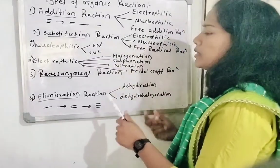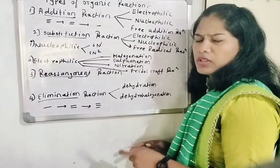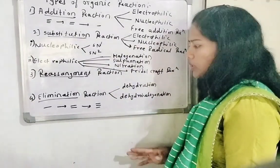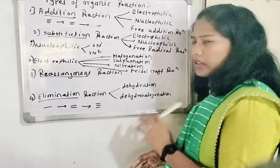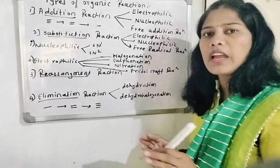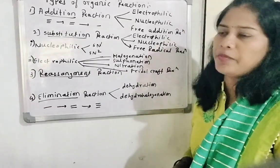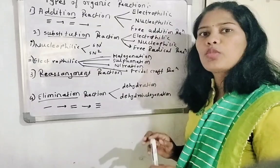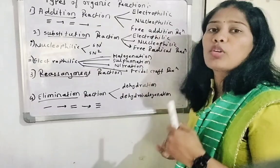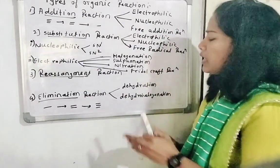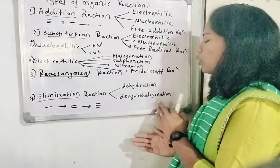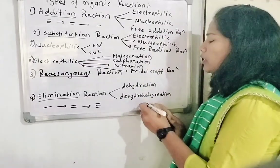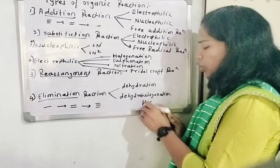Now there are many types of elimination reactions, but the major ones we commonly use are: Dehydration and Dehydrohalogenation. Dehydration means removal of a water molecule. Dehydrohalogenation means removal of HX.